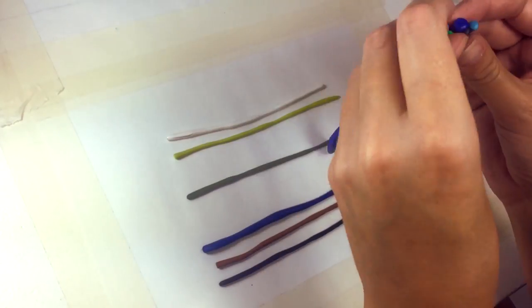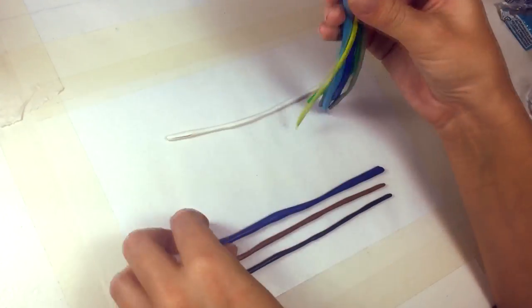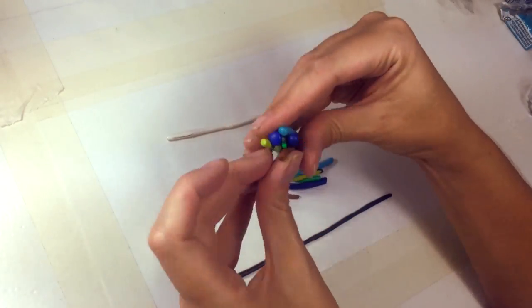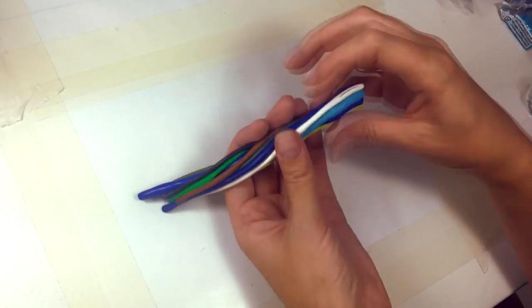Then I take all the long cylindrical pieces and place them around the big ultramarine blue piece, and then I twist them all together.